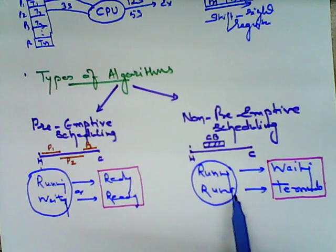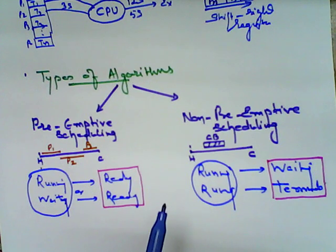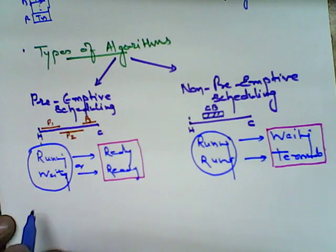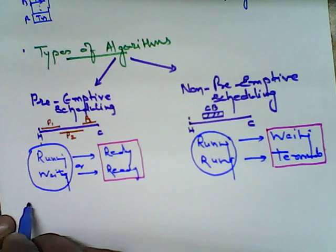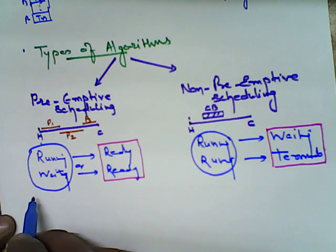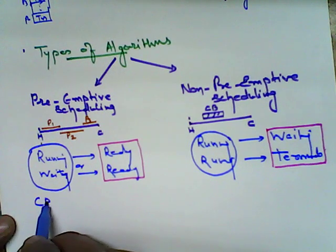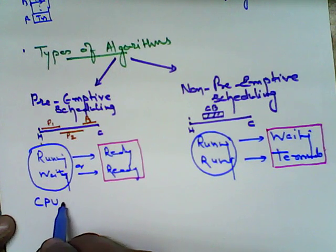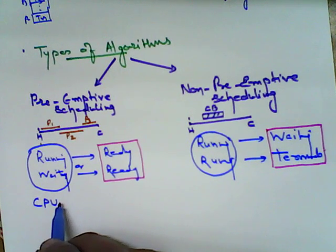Whenever you are in a preemptive state, you can allow the CPU to break at various intervals and take it away from the running process. That means you can break the CPU's execution.